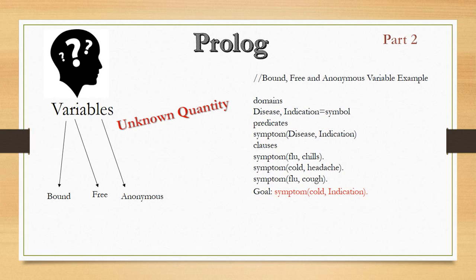In the goal I am writing symptom(cold, Indication). Here symptom is the relation name. In the place of disease I have written the value cold — that means the variable disease is bound for a particular given time. Bound means that in the goal, when you are querying, if a variable has been initiated or defined with a particular value, then it is called a bound variable.